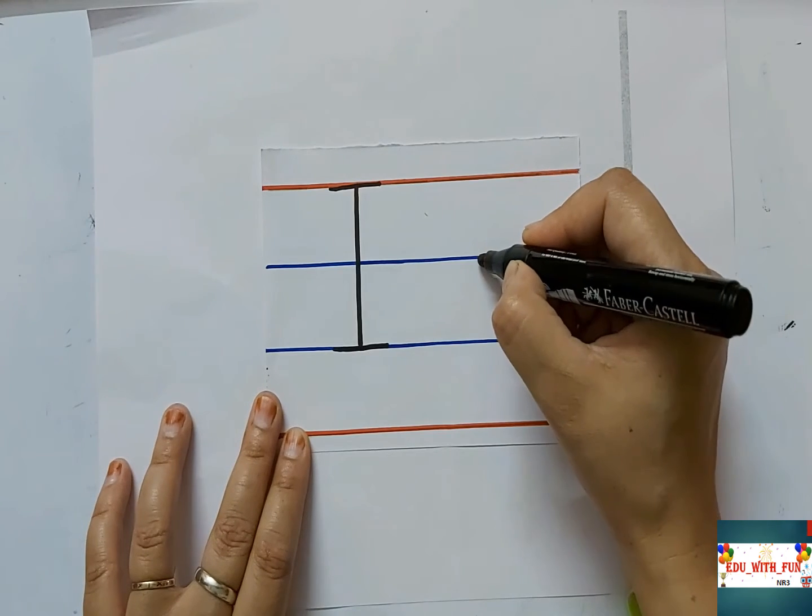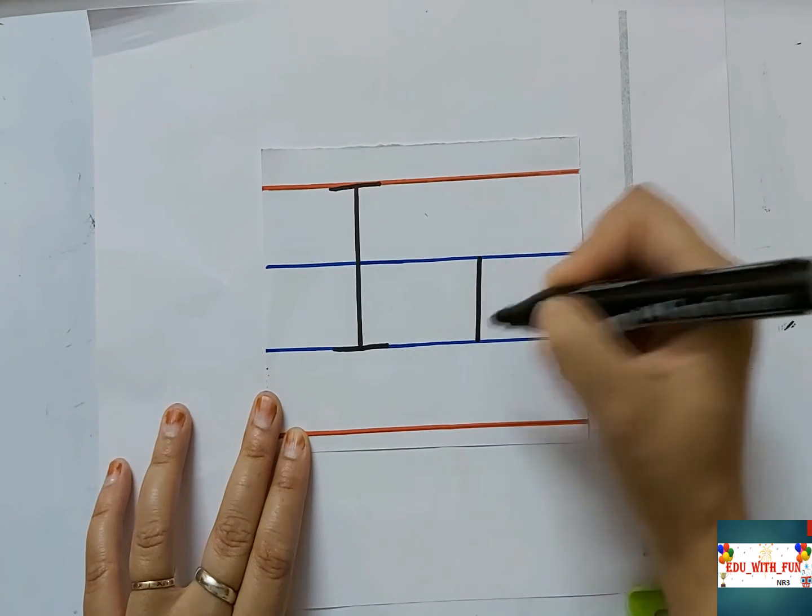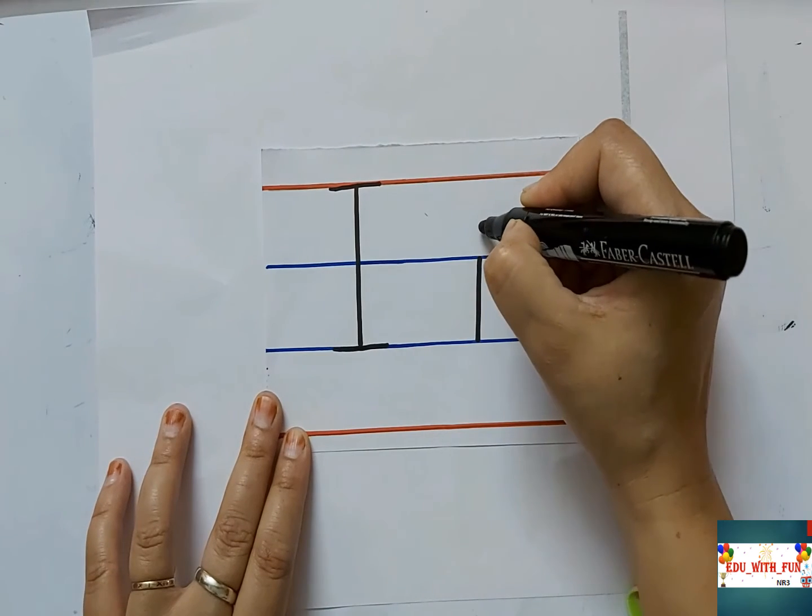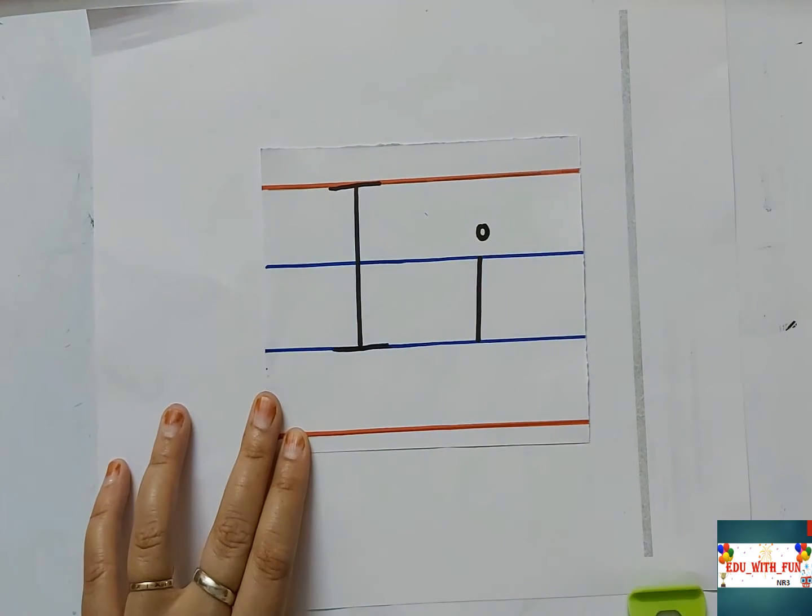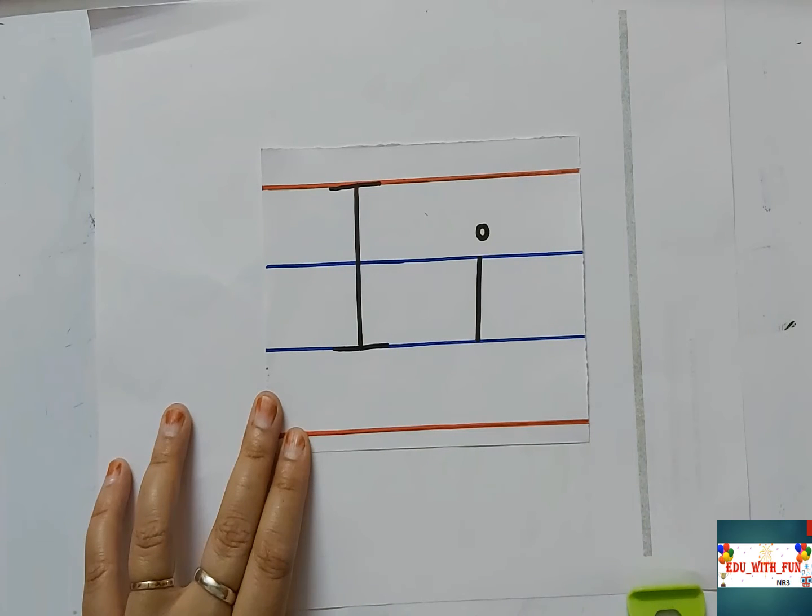Now writing small letter I is just a standing line in between second blue line and third blue line and draw a dot or you can draw a circle like this. This is very easy. Capital letter I and small letter I.